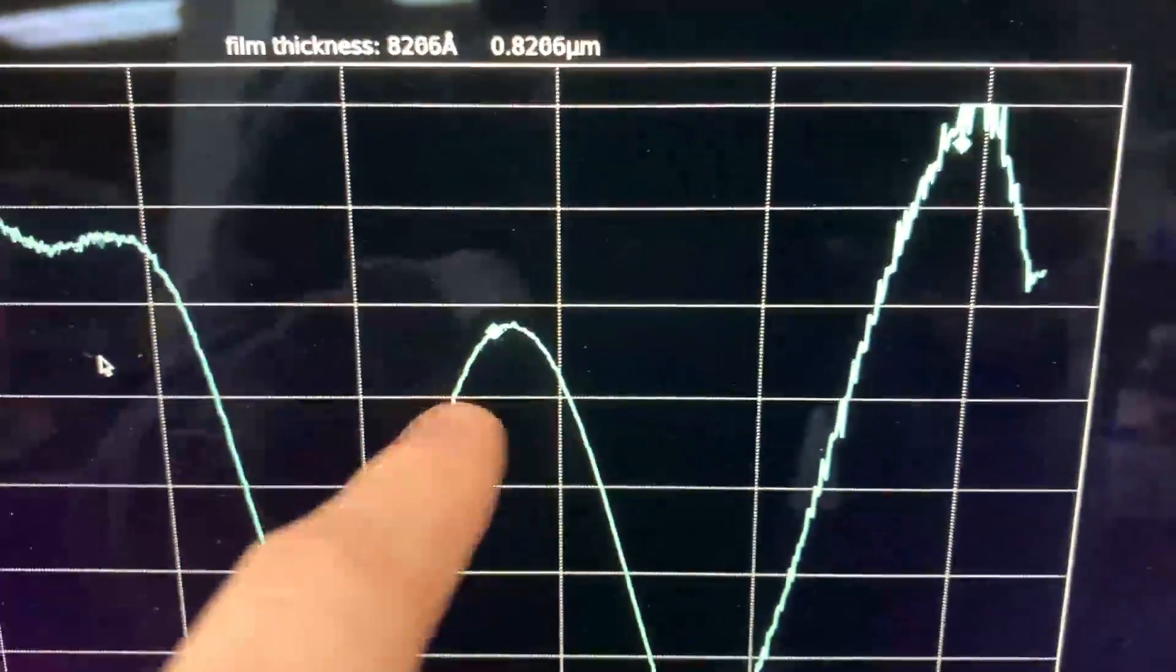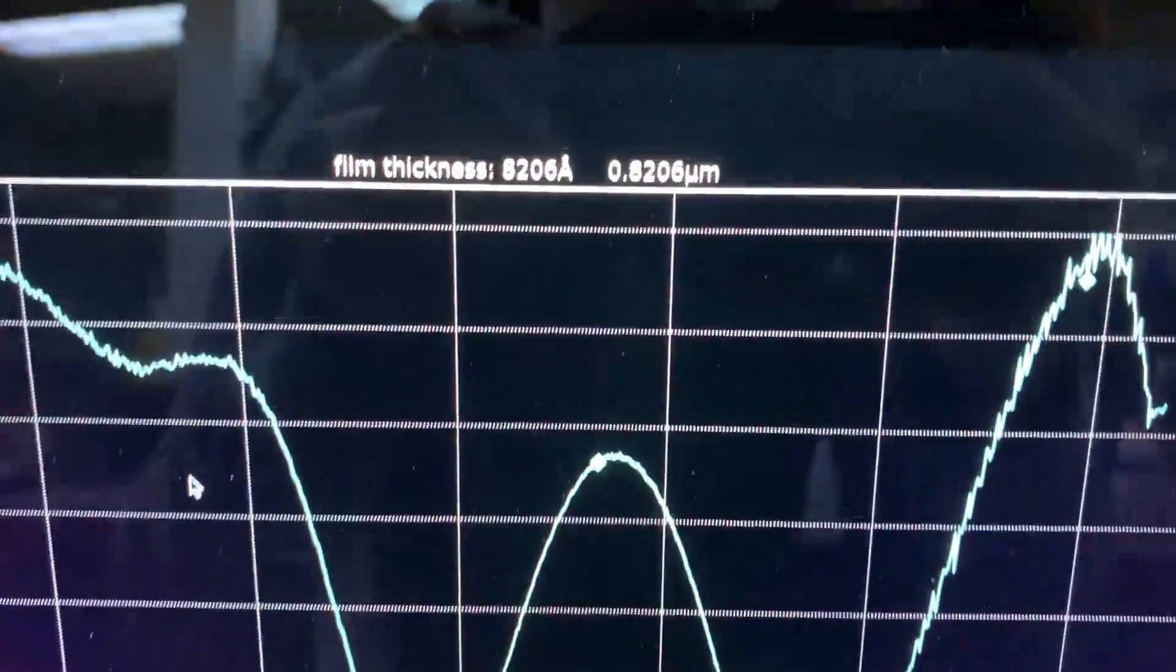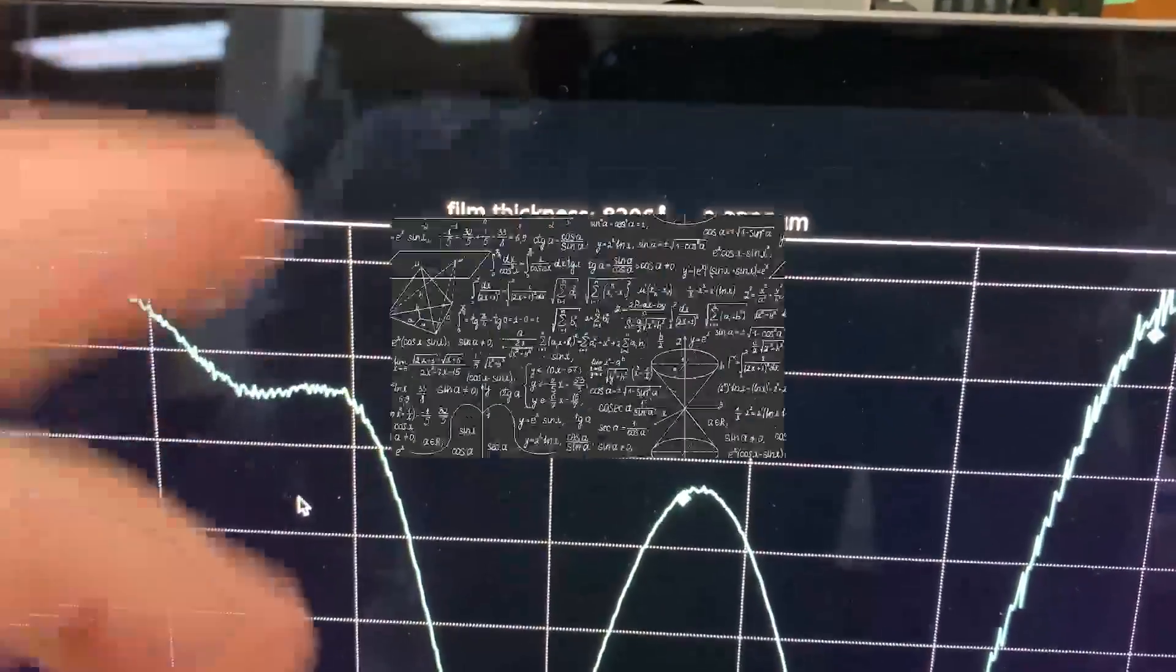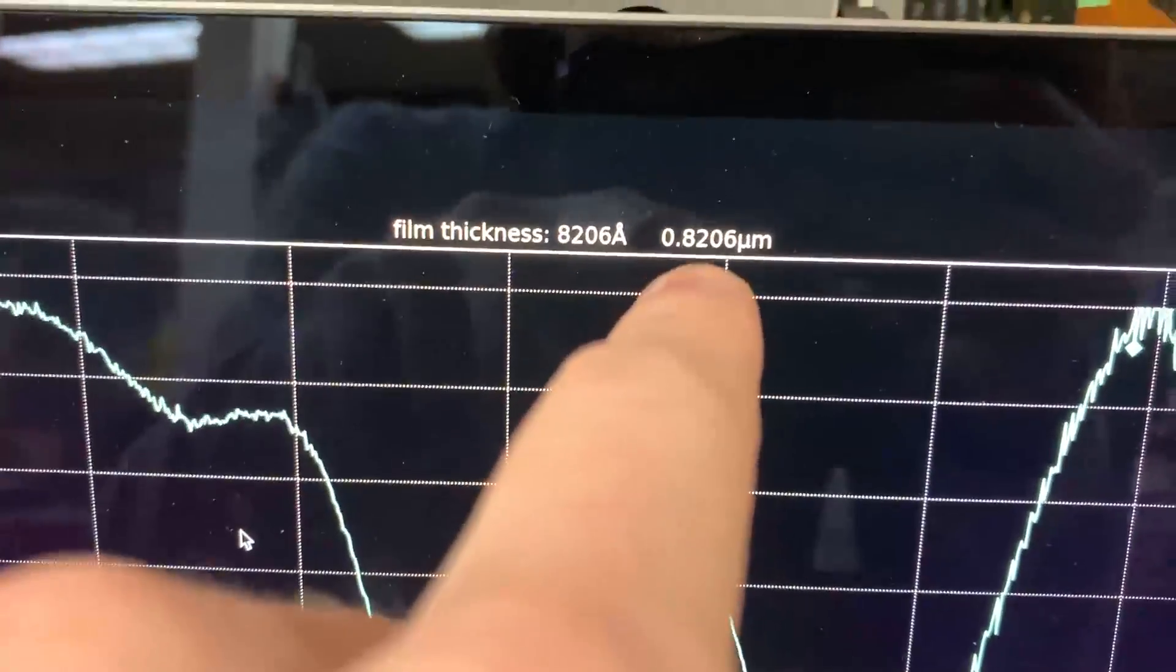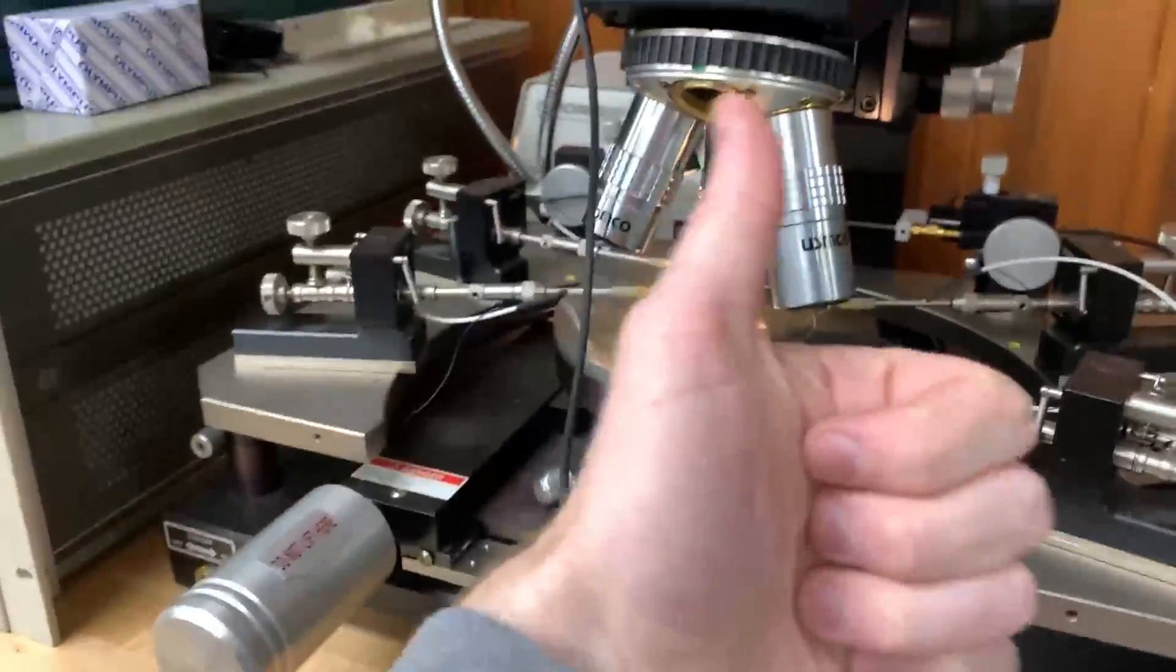It's found those peaks with little markers at the maximum minimum points and then given that spectra it's done some math which I'll show you and it said that our film is about 820 nanometers in thickness which is in pretty good agreement with the 750 nanometers we expect so this is great.